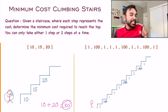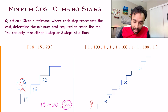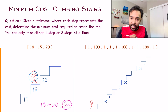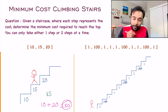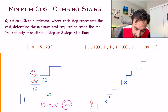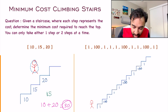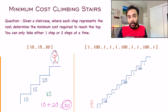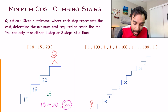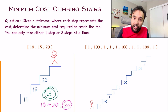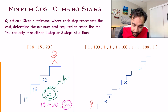You can start from either the first step or the second step. So instead of starting from 10, I can start from 15 as well. Once I am at 15, I pay the cost — 15 — and now I have an option: I can either go to 20 or take two steps and reach the top directly. So just with a cost of 15, I was able to reach the top. So for the first test case, 15 is your answer.